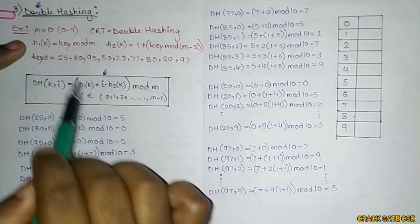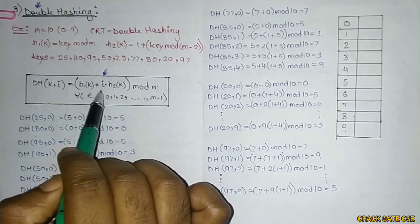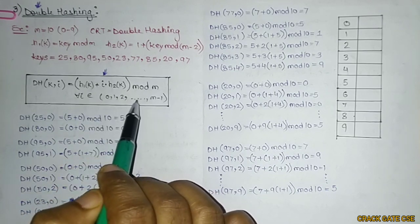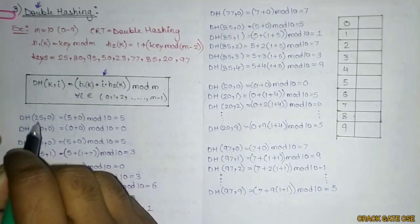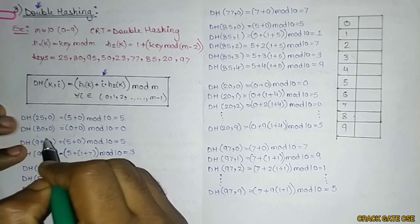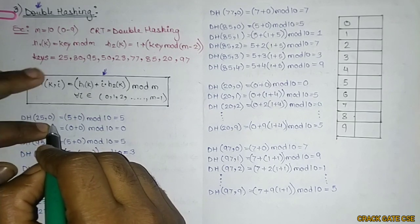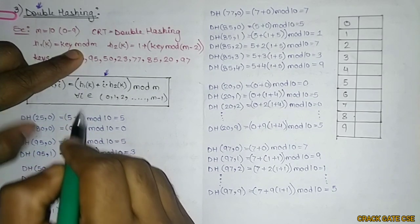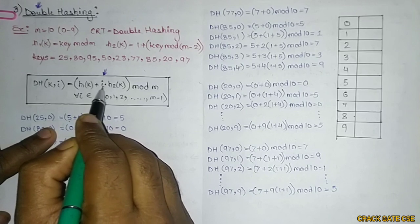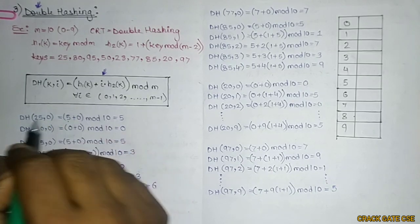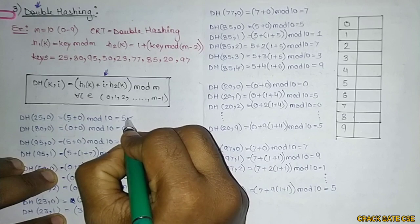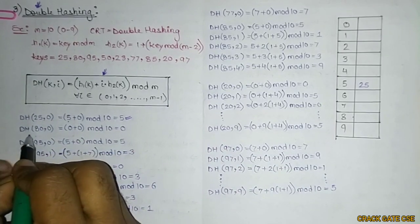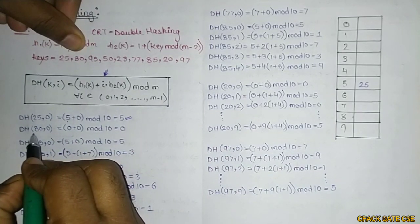The formula uses h1 as the first function and h2 as the second function. The variable i lies between 0 to m minus 1, and mod m where m is given. For the first key 25 with i=0: 25 mod 10 = 5, and i is 0 so no need to compute h2. We store 25 at position 5 — no collision. Similarly for key 80: 80 mod 10 = 0, i=0, so 80 is stored at position 0 — no collision.